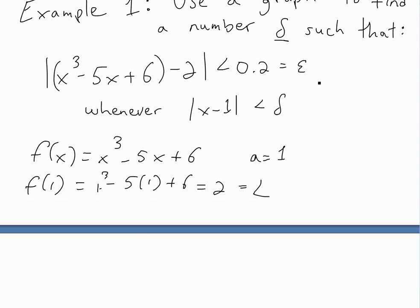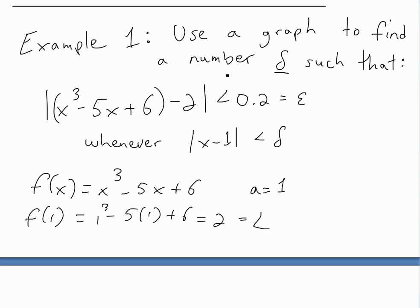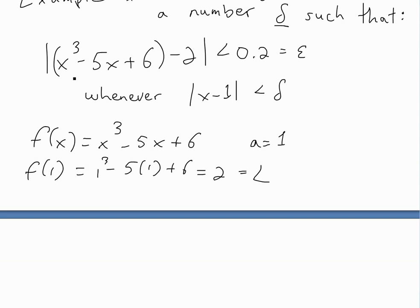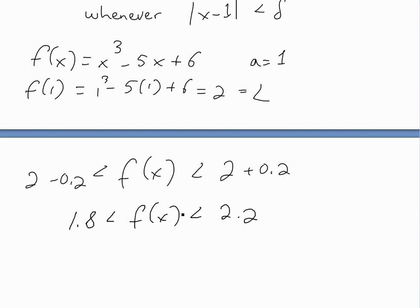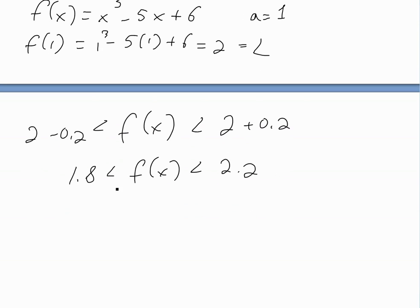Recall from the earlier video what epsilon means. All this is saying is that f of x minus the limit has to be less than 0.2. You could also write this as f of x having to be between 2 plus 0.2 and 2 minus 0.2 — that is, 1.8 is less than f of x and f of x is less than 2.2.